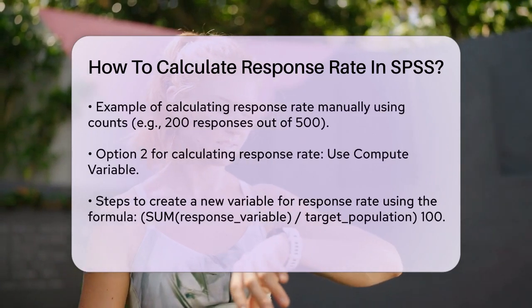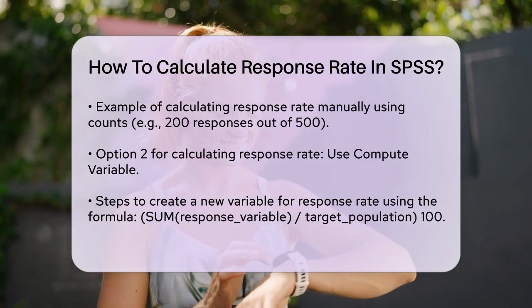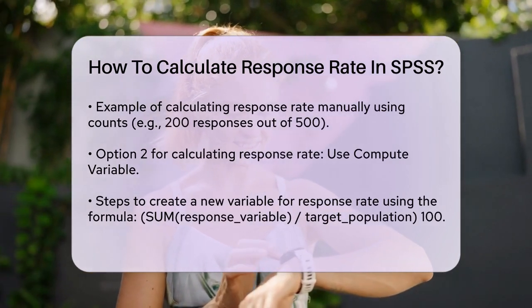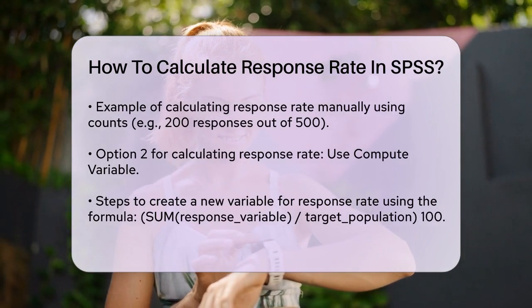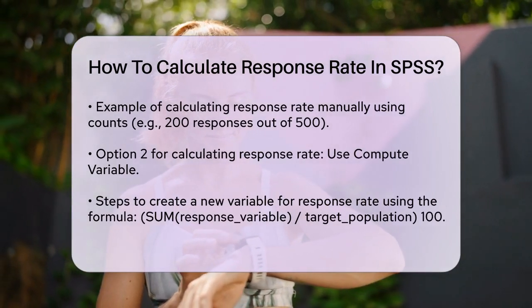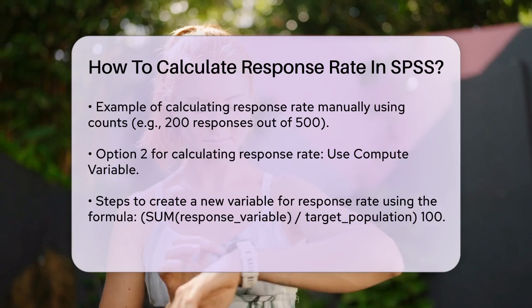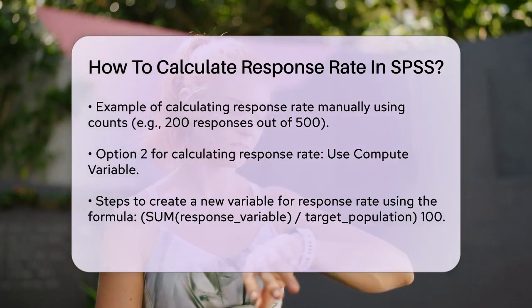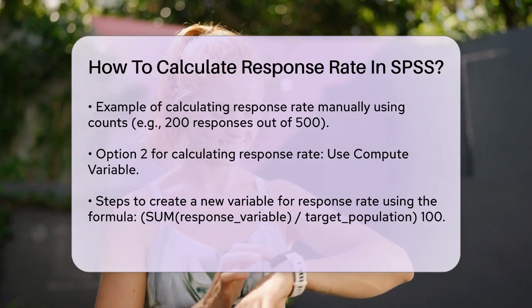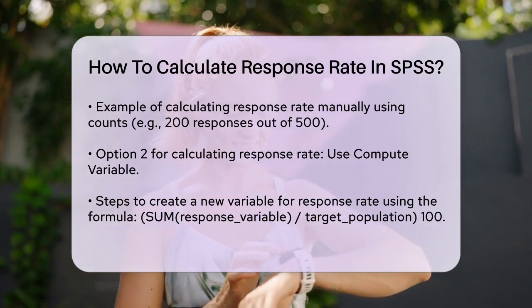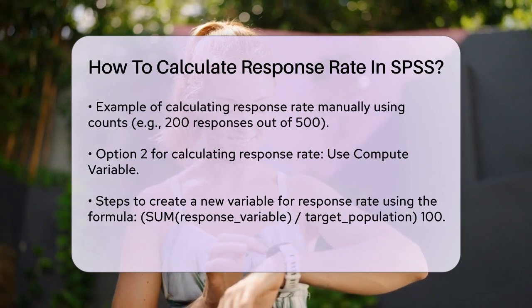Using Compute Variable: if you prefer a single value for the response rate, go to Transform > Compute Variable. Name your new variable, for example, 'response_rate'. In the Numeric Expression box, enter the formula: (SUM(response_variable) / target_population) * 100. Replace 'response_variable' with the name of your response variable and 'target_population' with the total number of individuals in your target population. Click OK.